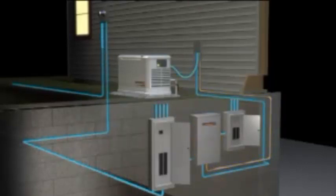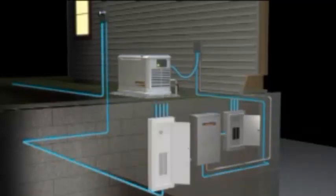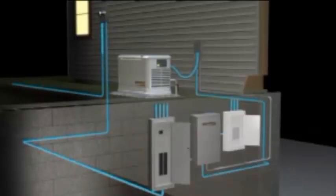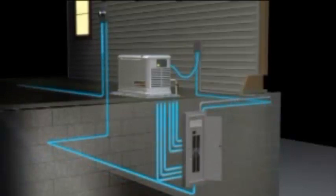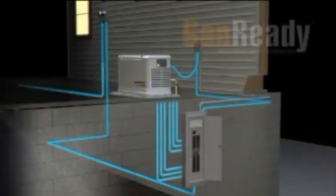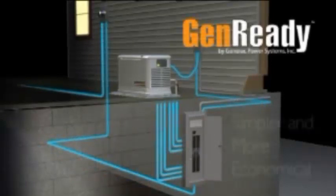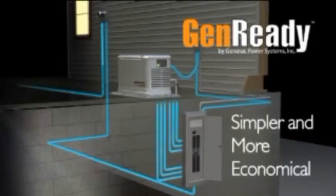With a traditional generator installation, three boxes are required: the main circuit panel, the automatic transfer switch, and the emergency circuit panel. But for new home construction or extensive remodels requiring electrical upgrades, installing the GenReady Load Center is simpler and more economical than a standard installation.